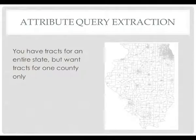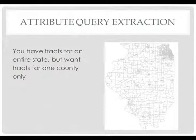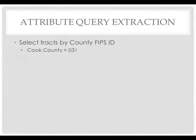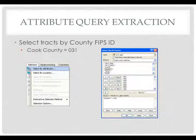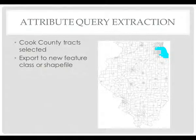The concept of attribute query extraction: for example, you have tracks — these are census tracks for an entire state — but you want tracks for one county only. This is what you would do by setting up a definition query, making a selection, and using that selection to create a layer from your selected features. So you select your tracks by county — if you only want the ones in Cook County, you select by attributes or use a definition query. In this case, the county code is 031, so county equals 031 creates a selection.